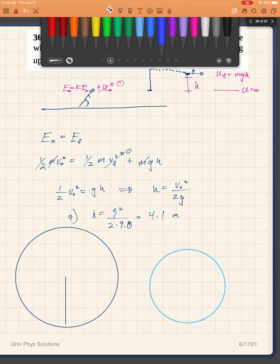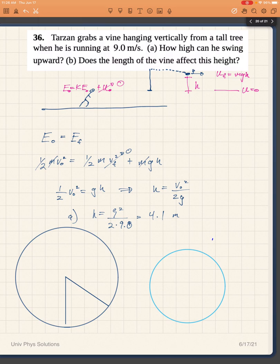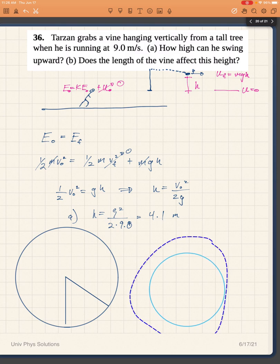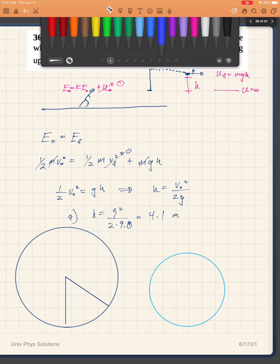And so in one case, Tarzan may swing from this initial height to say that final height. And if I try to align this at the same starting level there, in the final case, or the second case where there's a shorter vine...